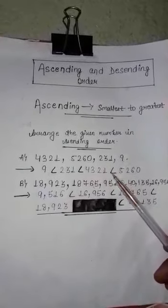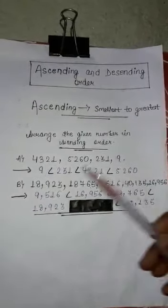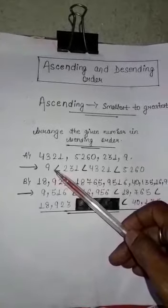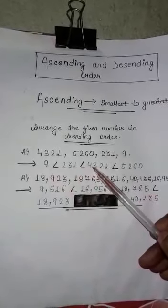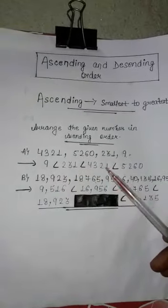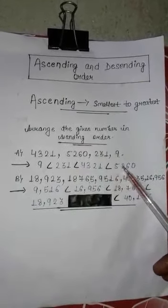4321. Then which is the biggest? 5260. So we will write in this way: 9 is less than 231, 231 is less than 4,321, and this one is less than 5,260.